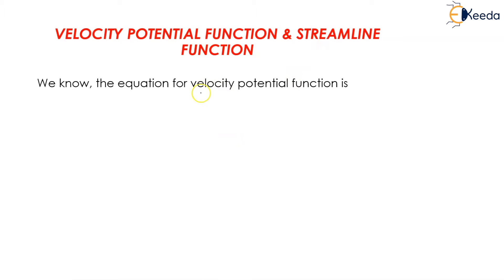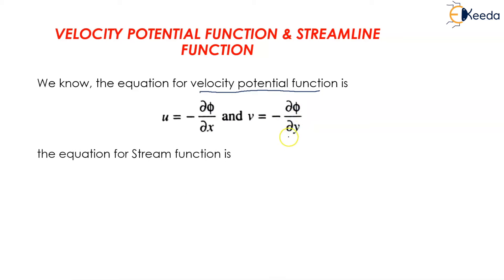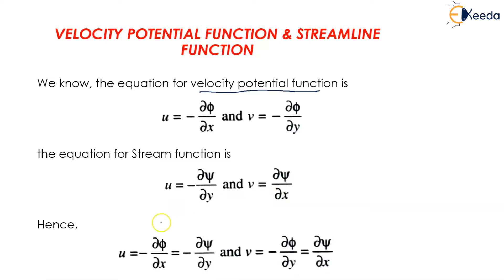We know that the equation for velocity potential function is u = -∂φ/∂x and v = -∂φ/∂y. The equation for stream function is u = -∂ψ/∂y and v = ∂ψ/∂x. Combining these, u = -∂φ/∂x = -∂ψ/∂y, and v = -∂φ/∂y = ∂ψ/∂x.